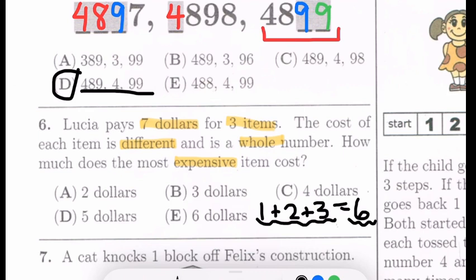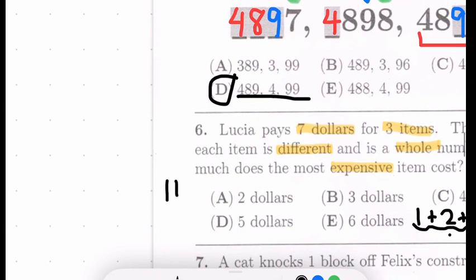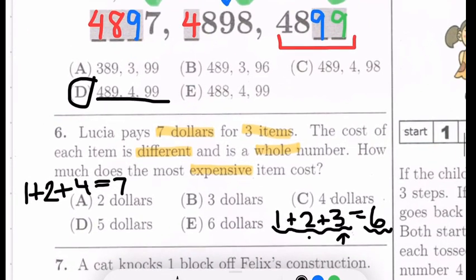We can't increase 1 by 1 because that would make it 2 plus 2 plus 3, and we need each cost to be different. We can't increase 2 by 1 for the same reason. So if we increase 3 by 1, we get 4. 1 plus 2 plus 4 equals 7. So the most expensive item is $4, and that is answer C.